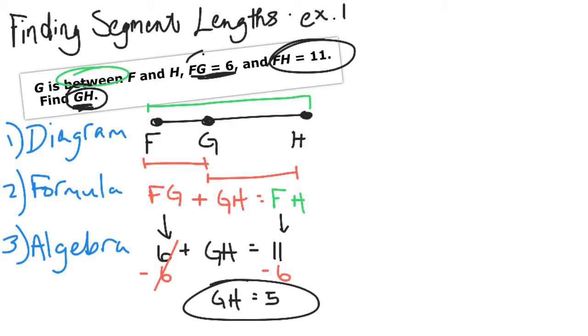So we found the missing segment length. If you really want to go back and check it, let's do that. If FG is 6 and GH is 5, does that add up to the 11 that it was supposed to be? Totally.